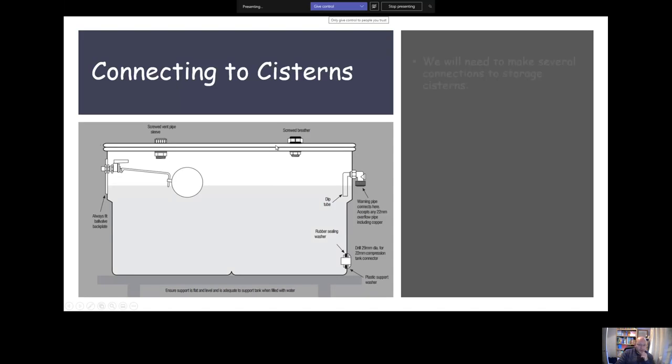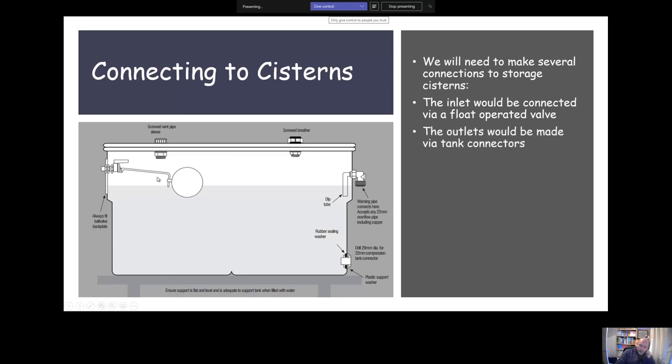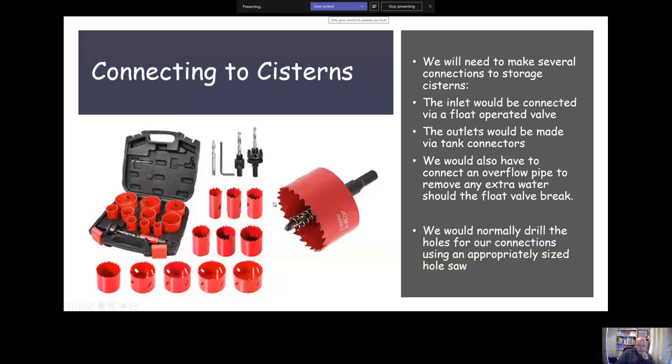For our connections connected to systems, there's lots of different connections we're going to need to make. Generally like I've already said, our inlet would be connected by a float operated valve and the outlets would be made with tank connectors. The overflow would be connected as well to remove any extra water should the float valve fail. We would make our connections using a hole saw. We need to make a correct sized hole using a hole saw, always make them just a tiny little bit bigger than the thing that needs to go through.